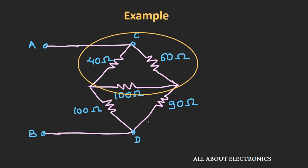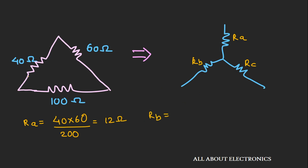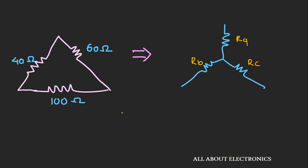We will convert the first delta network into the equivalent star network. Let's say the values of the resistors in the equivalent star network are Ra, Rb, and Rc. Ra equals 40 times 60 divided by the total resistance of 200 ohm, which gives 12 ohm. Rb equals 40 times 100 divided by 200 ohm, which gives 20 ohm. And Rc equals 60 times 100 divided by 200 ohm, which gives 30 ohm. So we got Ra as 12 ohm, Rb as 20 ohm, and Rc as 30 ohm, and we can replace this delta network with its equivalent star network.